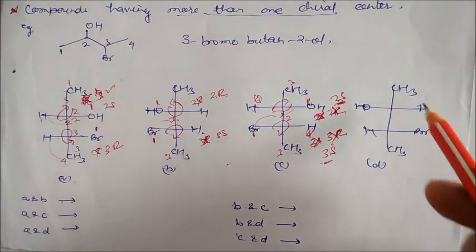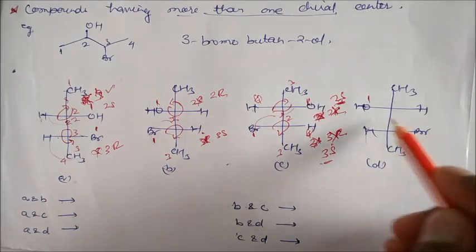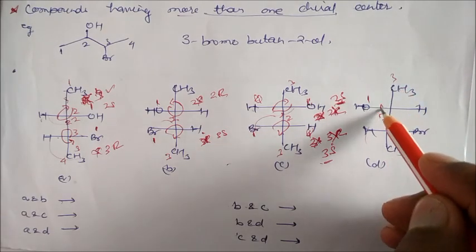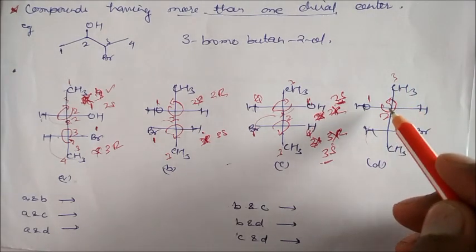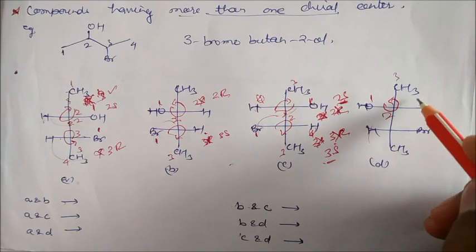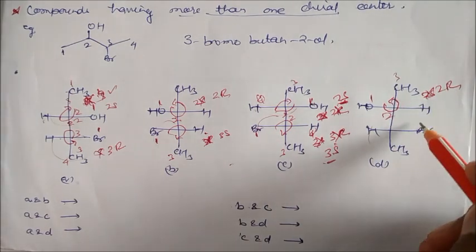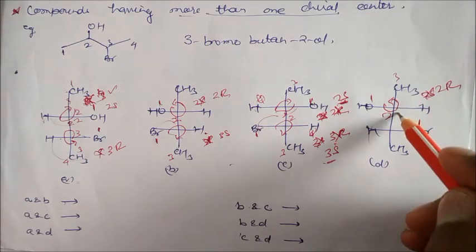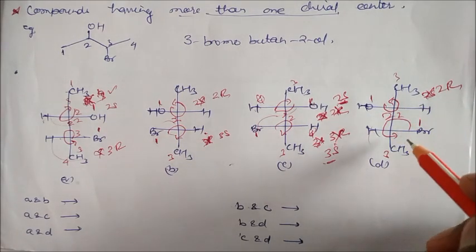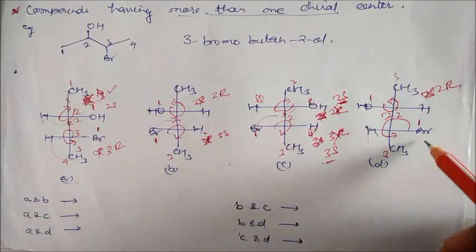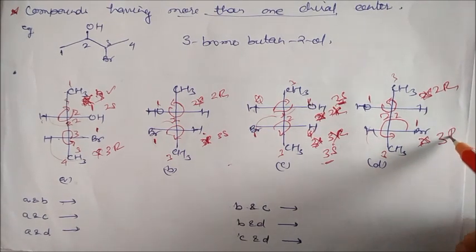Here also: CH3, OH, and hydrogen. OH is again 1, this whole group is 2, and this is 3. So 1, 2, 3 — looking like S. So 3S — but this is not 3S — this will be your 3R.